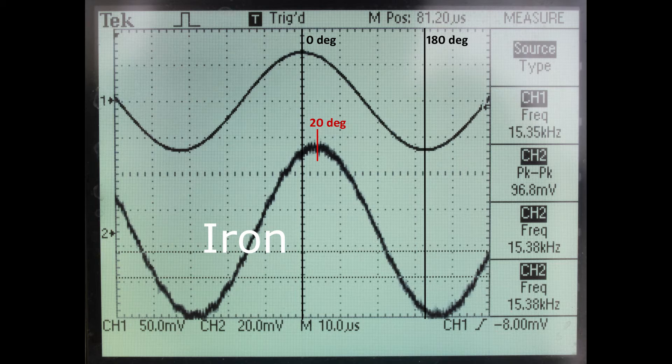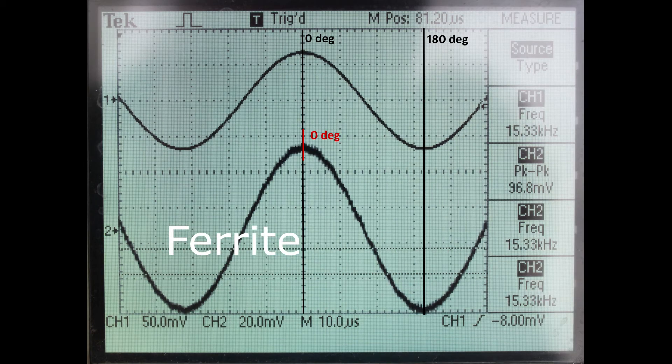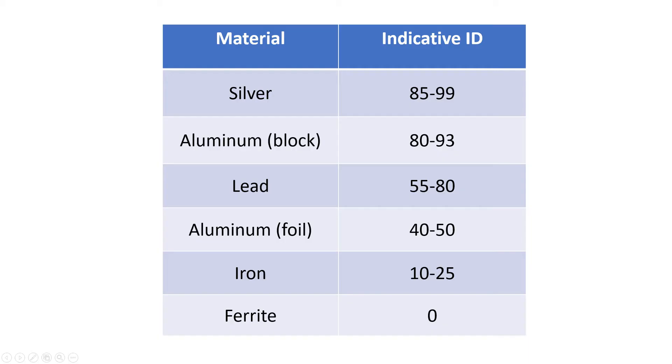The last graph I show here is for ferrite, which shows 0 degrees phase shift. It is clear that the IDs presented by the detector are somehow directly derived from the phase shift.